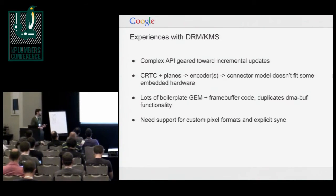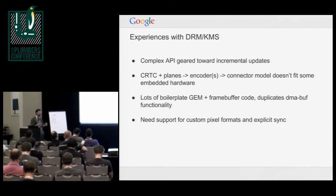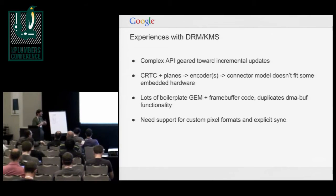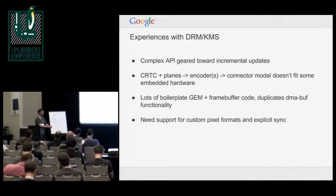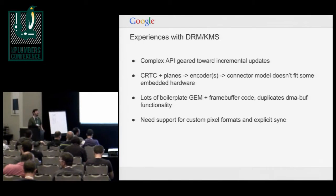A couple of smaller points were that there was no support built in for custom pixel formats — something we see very commonly on embedded hardware, where video decoder blocks produce unusual YUV formats that the display can scan out but you don't want to convert to a standard YUV format just to satisfy KMS. And also, the explicit sync support: with atomic mode setting you can sort of pass in incoming sync objects as a property of the frame buffer, which was kind of a hack, but it worked. The bigger problem was that the frame buffer driver also needs to pass a sync fence out, saying when these buffers are ready to be reused, and there was just no mechanism to pass something out of the atomic page flip.